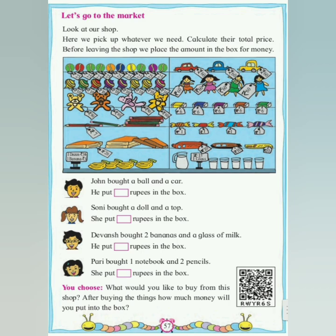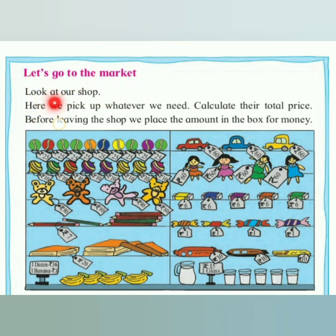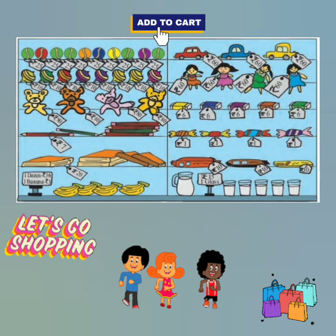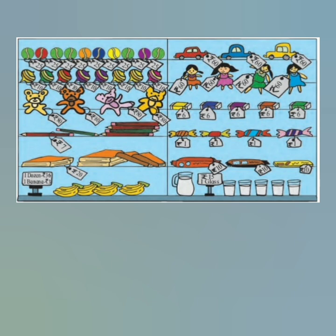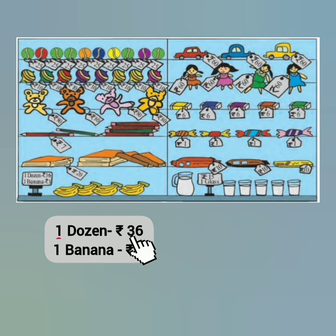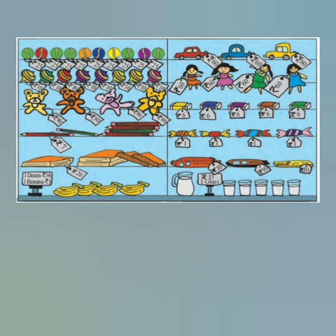Let's move on to page number 57 — let's go to the market. Look at our shop. Here we pick up whatever we need, calculate their total price, and before leaving the shop, we place the amount in the box for money. The shop offers the following items: balls cost 25 rupees each, tops 10 rupees each, teddy bears 80 rupees each, pencils 7 rupees each, books 20 rupees each, bananas — 1 dozen costs 36 rupees and 1 banana costs 3 rupees. In 1 dozen there are 12 bananas, so 12 into 3 is 36.